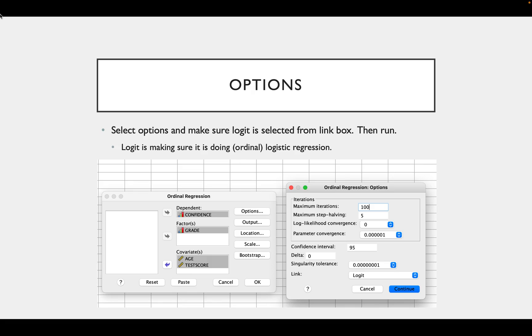Then you want to click Options and make sure Logit is selected from the link box. This is usually the default, but you do want to check this as it is making sure it is doing an ordinal logistic regression. And then you can run the analysis.